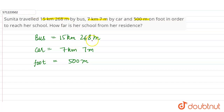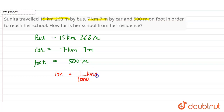We have to convert meters into kilometers. One meter is equal to 1/1000 kilometer. So we need to convert 268 meters into kilometers: 268 meters = 268 × (1/1000) kilometers.